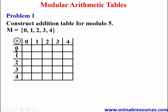We start from the first row: 0 plus 0 gives 0, 0 plus 1 gives 1, 0 plus 2 gives 2, 0 plus 3 gives 3, and 0 plus 4 gives 4. We are done with the first row.